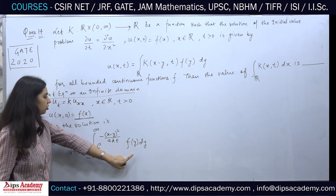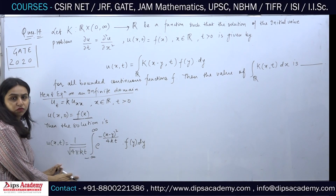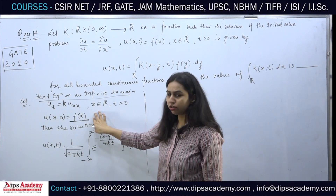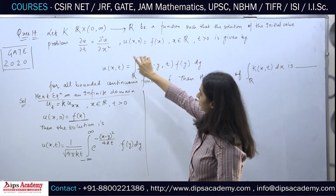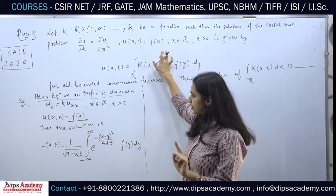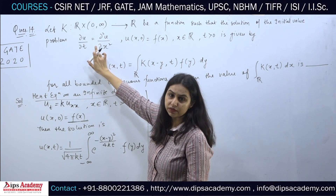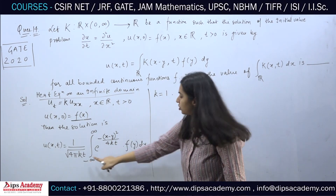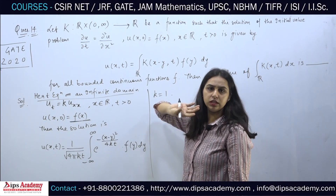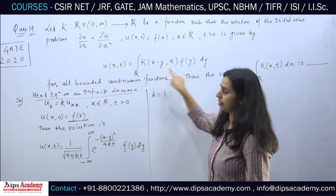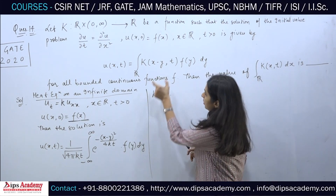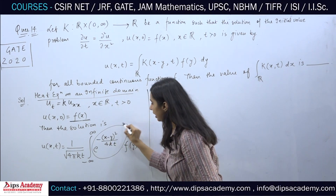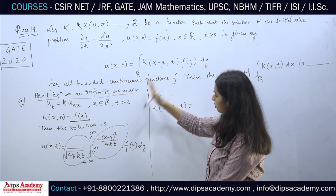Here the initial function was f(x), and in the formula you just replace the variable x with y. You can directly solve it using this formula without going into the derivation. Now, comparing this formula with the given problem: they are entirely the same, except here k is arbitrary while in the given problem the specific value of k is one. So you put k=1 into the formula. Comparing the given solution form, capital K(x−y, t) corresponds to (1 / sqrt(4πkt)) · e^(−(x−y)²/4kt).